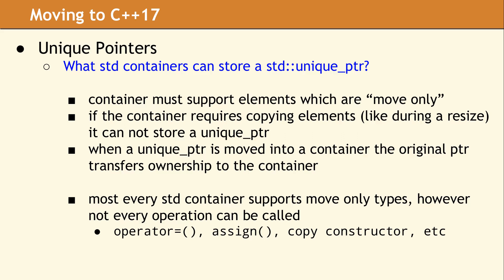For example, if the container has methods for copy assignment or a copy constructor, calling them will be a compiler error. In order to add a move-only element, like a unique_ptr, std::move must be used to transfer the smart pointer into the container.